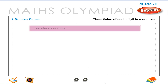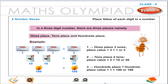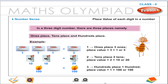Place value of each digit in a number. In a three-digit number there are three places: ones place, tens place, and hundreds place. In example 1, we have in the ones place three ones, therefore place value is equal to 3 × 1, or 3. In example 2, we have in the tens place two tens, therefore place value is equal to 2 × 10, or 20. In example 3, we have in the hundreds place 1 hundred, therefore place value is equal to 1 × 100, or 100.